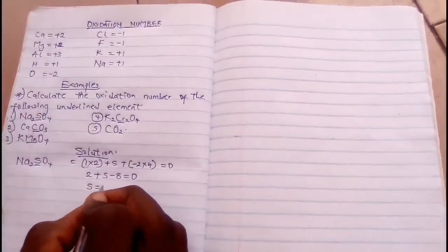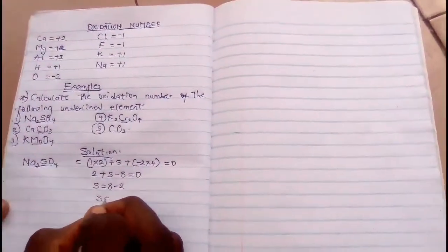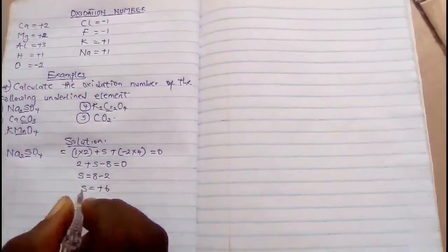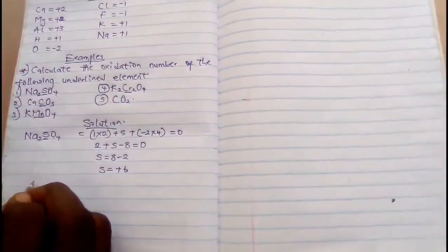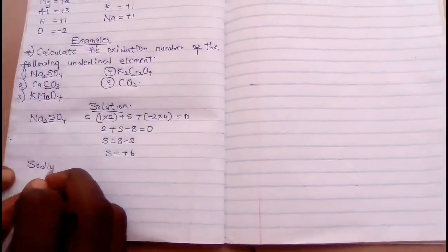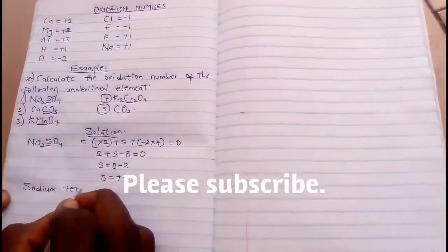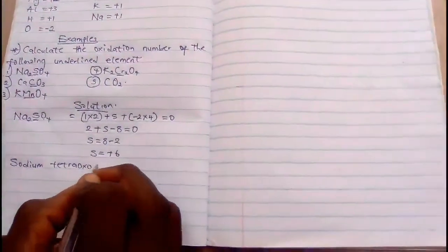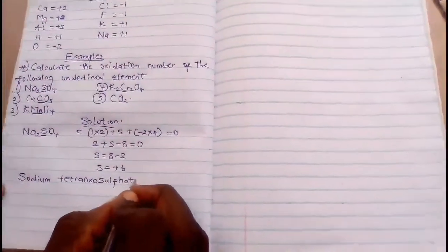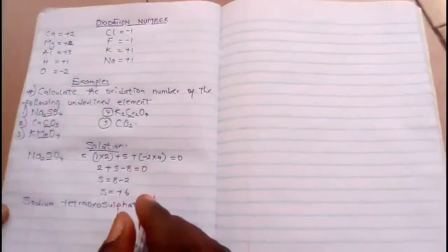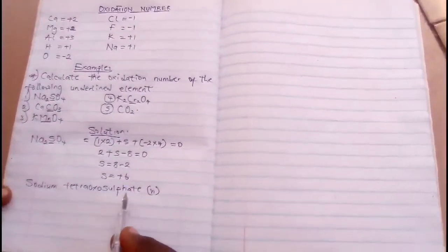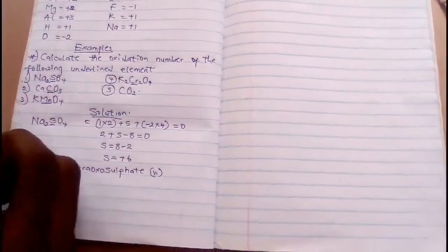So it will give you S = +8 - 2, then S = +6. This is our answer. Then the IUPAC nomenclature, which is the IUPAC name for this compound, is sodium tetra-oxo-sulfate. What is our answer? +6.